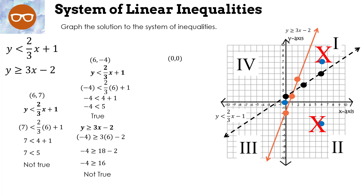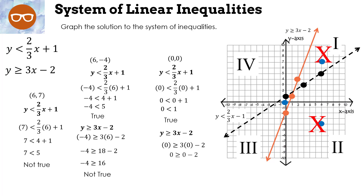Test region 3 with (0, 0). First inequality: 0 < 0 + 1 = 1 — is 0 < 1? Yes. Second inequality: 0 ≥ 3(0) − 2 = −2 — is 0 ≥ −2? Yes. Both are true, so region 3 is our solution region. Any ordered pair in region 3 will make both inequalities true.